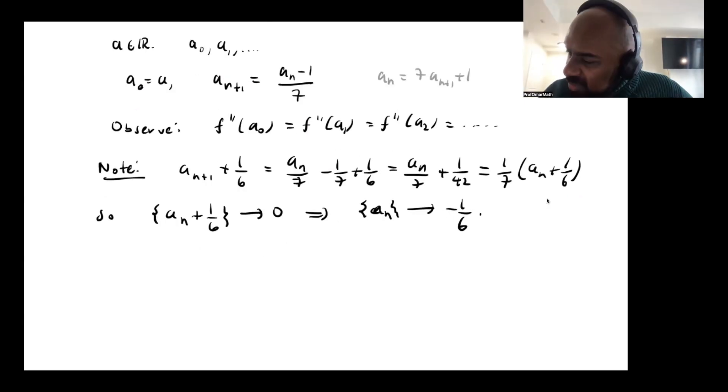Okay, but the second derivative is continuous, so the second derivatives of these points all converge to the second derivative of f evaluated at negative 1/6. All right, well, what does that mean? Well, all of these values are actually exactly the same.